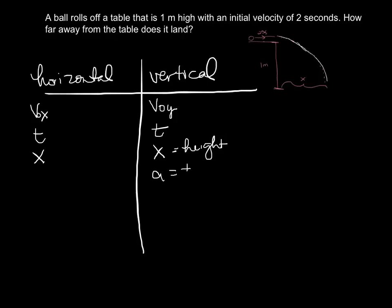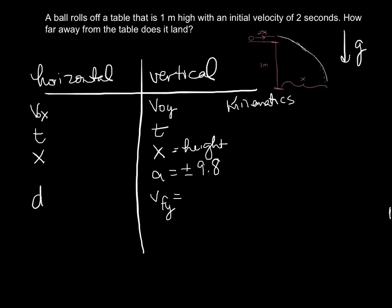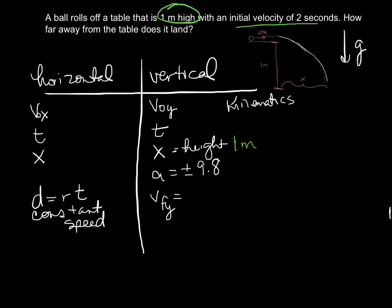Our vertical variables are: initial y-velocity, time, displacement (height), acceleration (positive or negative 9.8 under gravity), and final y-velocity. Horizontally, since we're at constant speed, we use distance equals rate times time. We know the table is 1 meter high, so that goes in as height. The initial velocity of 2 meters per second is horizontal, so that's our initial x-velocity.